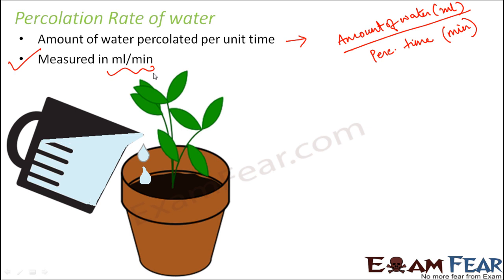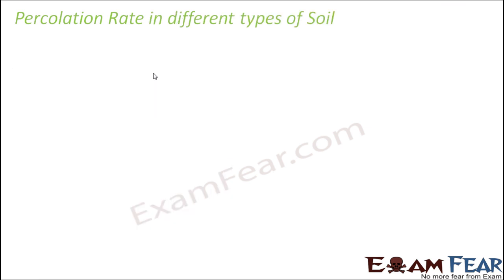The percolation rate is different for different types of soil — loamy, sandy, and clayey soils all have different rates. Knowing this helps us decide which type of soil is best for a particular plant. For example, if we want to plant a tree that needs water to go deep inside, we need a soil with a very high percolation rate. Knowing the percolation rate helps us decide the crop suitable for a particular soil.